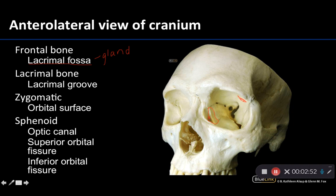Moving on to the zygomatic bone right here — colloquially we refer to the zygomatic bone as the cheekbone. The specific part we need you to know for this lab is the orbital surface. This is the external surface of the zygomatic, and this region right here is the orbital surface, forming a good portion of the lateral wall and even a little bit of the inferior wall of the orbit.